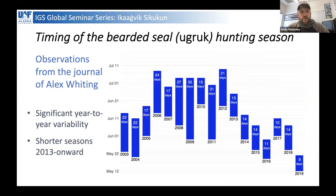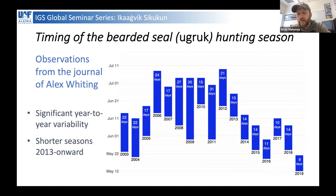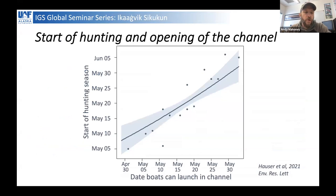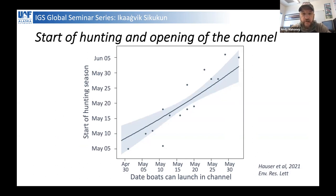Using journals from our local partner Alex Whiting — a scientist with the native village of Kotzebue — we found quite a lot of variability over the years in the timing and duration of the bearded seal hunt. In the last decade there's been a marked decline, and the 2019 season was the earliest to open, earliest to close, and shortest season since he'd been keeping records. Looking at satellite data, we found a very strong correlation between when the season starts according to the journal and when that channel is visible in satellite imagery.